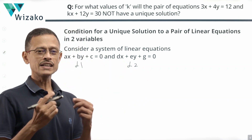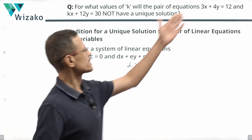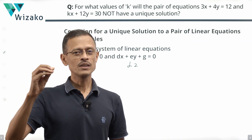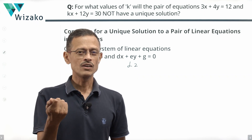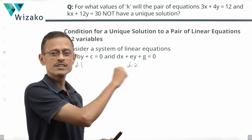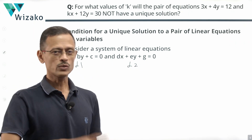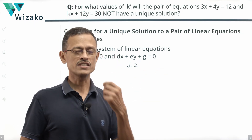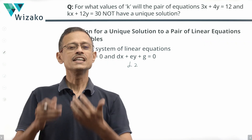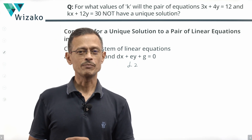We're trying to find out when these two lines will have a unique solution. What do we mean by that? When we solve these two equations, we get a value for x and y — that is what we call a solution. What does the solution actually mean? The solution (x, y) on the x-y plane represents a point. If it's a solution to both equations and each equation represents a line, then that point lies on both lines — it is a point common to both lines. So the solution to a pair of linear equations is the point of intersection of two straight lines.